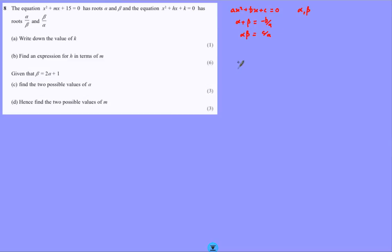From the first one, what we've got: roots alpha, beta, and therefore alpha plus beta for this first quadratic is minus b over a, which is minus m. And alpha beta, product of the roots, is 15 over 1, which is 15. In the second case, we've got the sum of the roots - new roots here - alpha over beta plus beta over alpha. The sum equals minus h. And we've got the product of those roots, alpha beta divided by beta alpha, the product is 1, and c over a, k over 1, is k. That gives me my answer to the first part there.